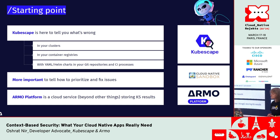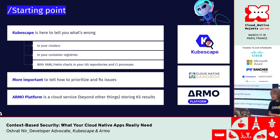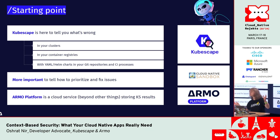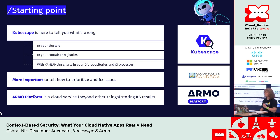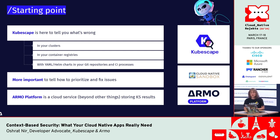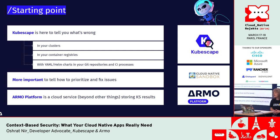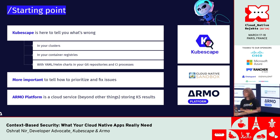KubeScape is the first Kubernetes security scanner that was accepted by the CNCF. In the past year or so, it's been a sandbox project and it's evolved into much more than a security scanner. We're in a bid for incubation this year, so if you're using KubeScape, please add yourself to the adopters list on GitHub so that we can get to incubation. Many of the things we are talking about today are in KubeScape, and Armo platform is the enterprise version of KubeScape — it takes all of KubeScape's insights and gives more context and guides users through the maze of security alerts.